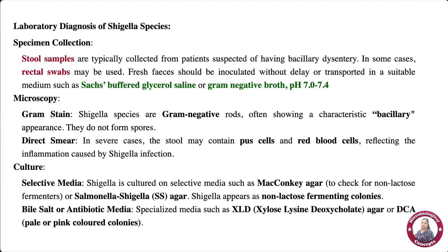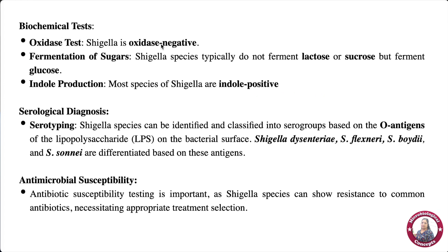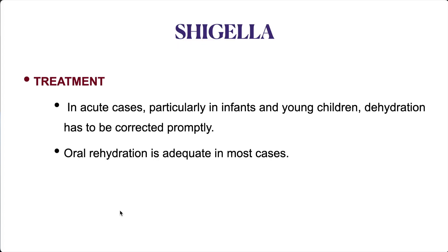Selective culture media used include MacConkey agar, SS agar, XLD agar, and deoxycholate agar. In biochemical tests, Shigella is oxidase negative, does not ferment lactose or sucrose, but ferments glucose. Most Shigella species are indole positive. For serological diagnosis, species are classified based on O antigens into Shigella dysenteriae, Shigella flexneri, Shigella boydii, and Shigella sonnei. Antimicrobial susceptibility testing is essential because Shigella can show resistance to many common antibiotics.